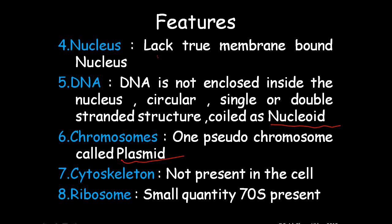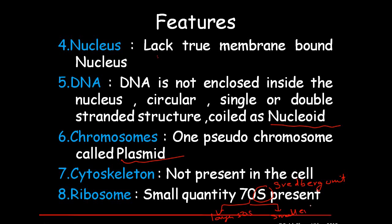Ribosome: a small quantity of 70S ribosome is present. S is a Svedberg unit. 70S has two sub-units: the larger 50S and the smaller 30S. These two ribosomes are found in prokaryotic cells. Also, 4 to 8 ribosomes combine together with messenger RNA to form polyribosomes. These are the structures found in prokaryotic cells.